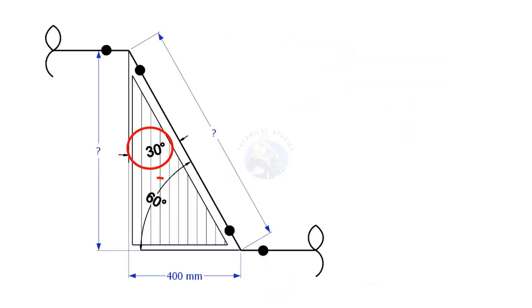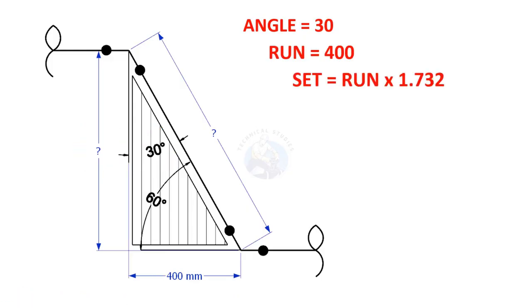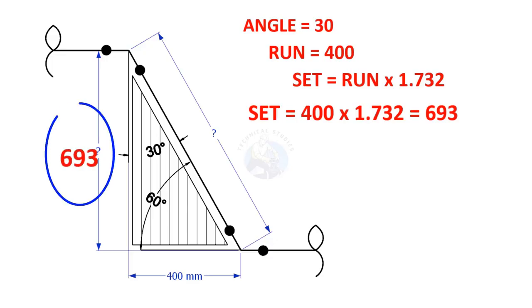The other most common offset degrees are 30 degrees and 60 degrees. If the angle is 30 degrees and the run is 400, what will be the value of the set? Set is run multiplied by 1.732. Here 1.732 is a constant. Let us calculate. 400 multiplied by 1.732 is 693. So the value of set is 693.